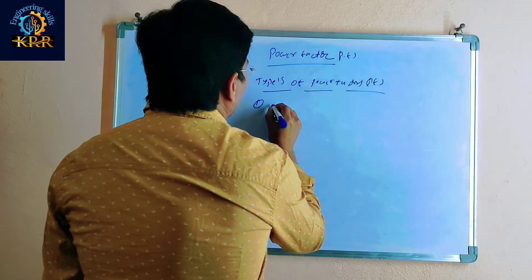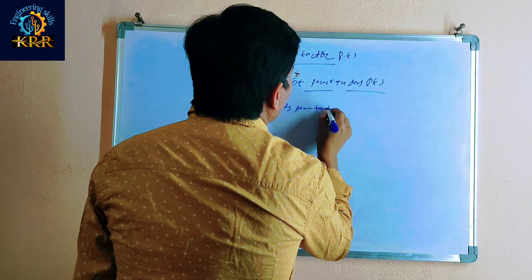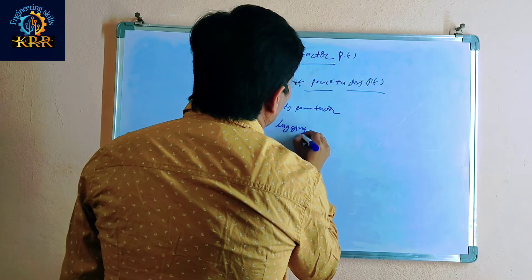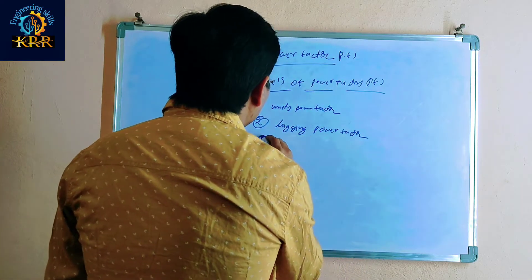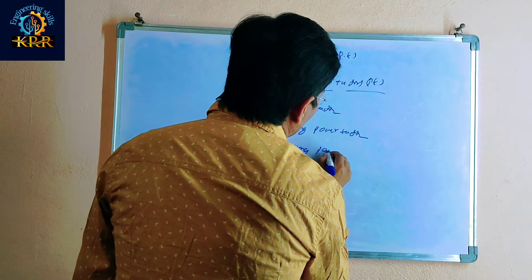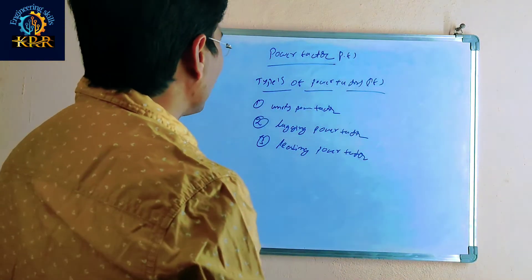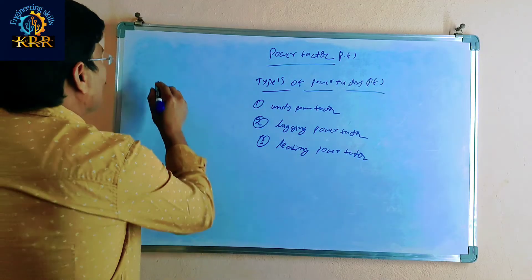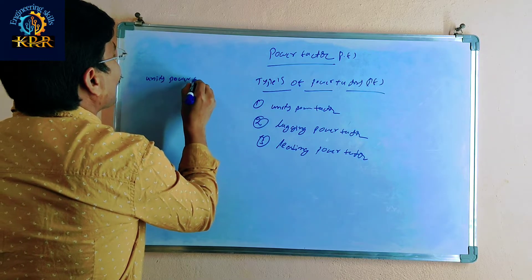First one is the unity power factor. Second one is called lagging power factor. Third one is called leading power factor. Now, first, let us go to the unity power factor.